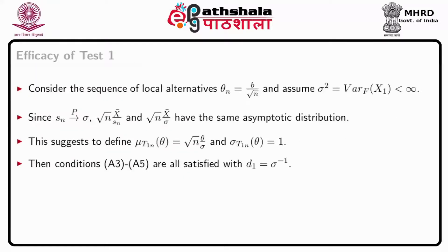Consider the sequence of local alternatives theta_n equal to B by root n, and assume the variance of the distribution function is finite. Since s_n converges to sigma in probability, root n times x-bar divided by s_n and root n times x-bar divided by sigma have the same asymptotic distribution. This suggests defining mu(T1_n, theta) equal to root n times theta by sigma and sigma(T1_n, theta) equal to 1, so conditions A3 to A5 are all satisfied with D1 equal to sigma to the power minus 1.